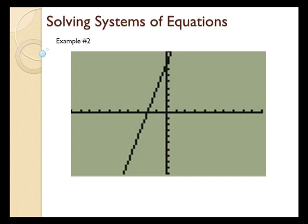Same thing in number two, except instead of having a quadratic function, I have a linear function. The equation for this line is y equals 4x plus 8, and we find where y equals 0. What does x need to be to make that equation work? In this case it's going to be negative 2, so the solution is at negative 2.